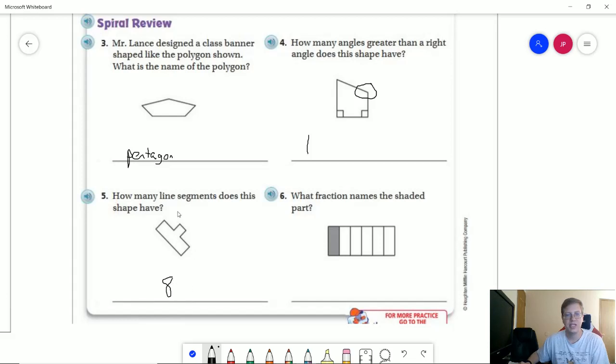And so this would be an octagon, even though it's not a stop sign shape that we'd be used to seeing for that. And the fraction that names the shaded part would be one sixth for that.